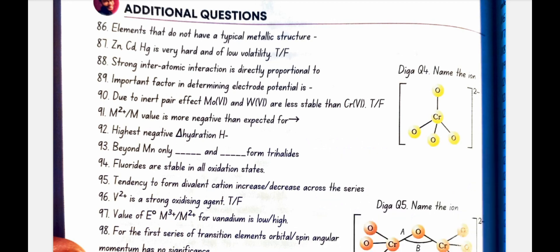Fluoride is stable in all oxidization states. No, not in lower oxidation states. Tendency to form chelate with carboxylate increase or decrease across the series. Decreases.